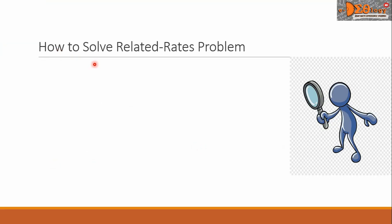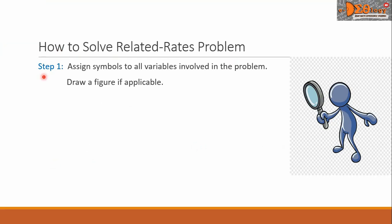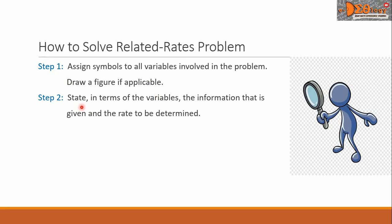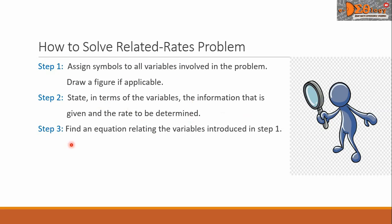Let us see how to solve related rates problems. Step 1: Assign symbols to all variables involved in the problem, and draw a figure if applicable. Step 2: State, in terms of the variables, the information that is given and the rate to be determined. Step 3: Find an equation or formula relating the variables introduced in Step 1.